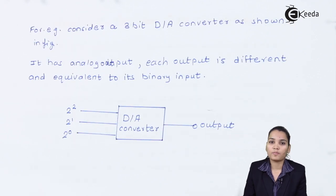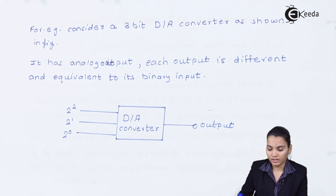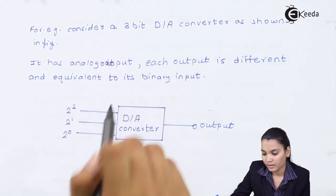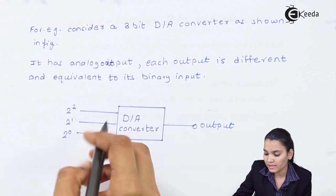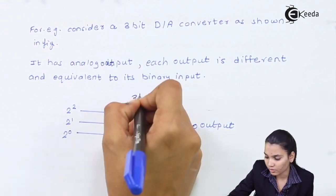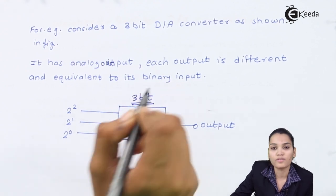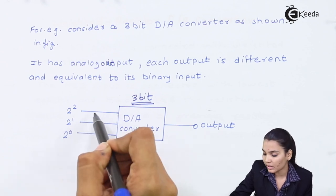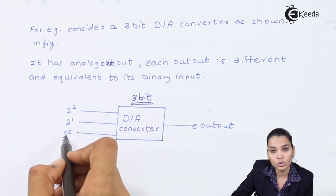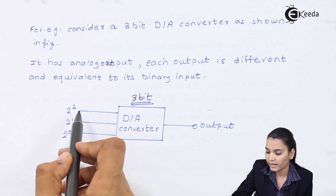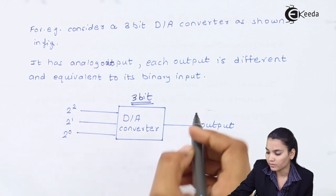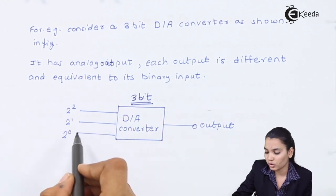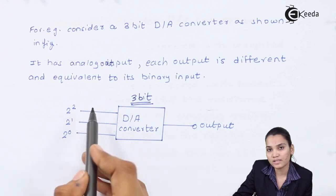Now we are going to see the block diagram of the D-to-A converter. Consider a 3-bit D-to-A converter as shown in this figure. It is a 3-bit converter because it has 3 inputs and only 1 output. Each 3-bit input corresponds to 2 raised to 0, 2 raised to 1, and 2 raised to 2, and the output will be proportional to the input values of these signals.